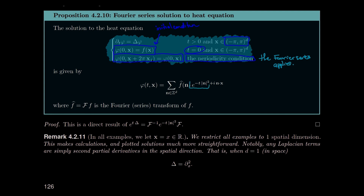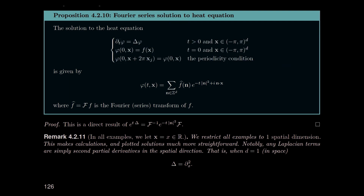Once we know the Fourier series applies, this term here is the Fourier multiplier corresponding to e^(t·Δ). Our solution φ is e^(t·Δ) applied to f(x) — it's e^(t·Δ) times our initial distribution of heat. This is simply how heat evolves.